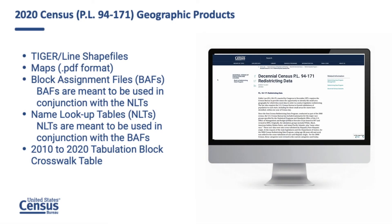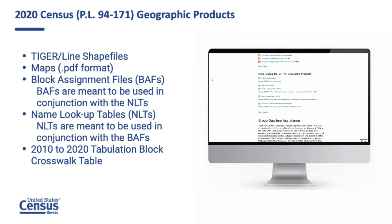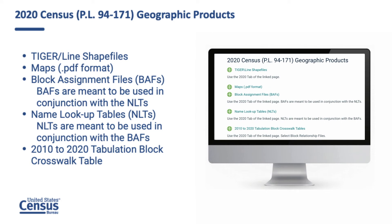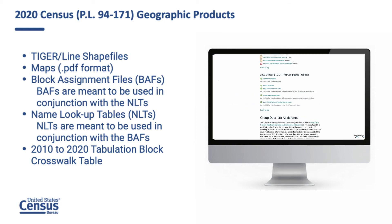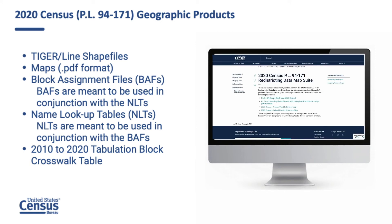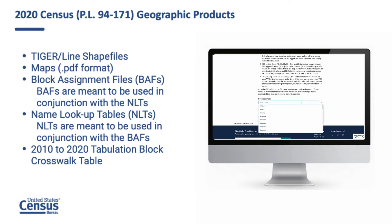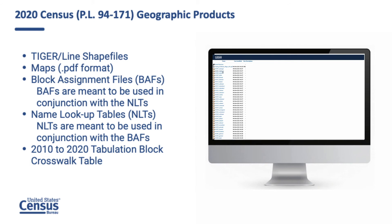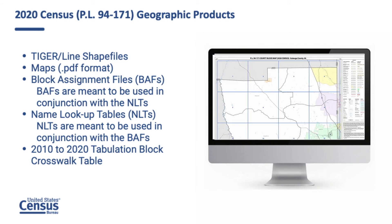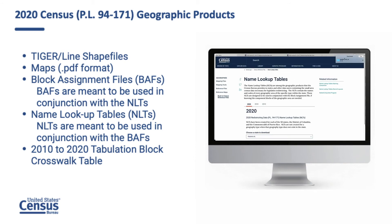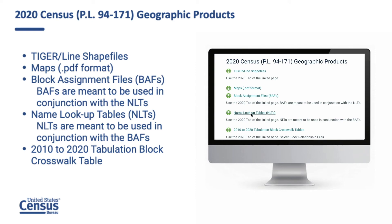Data users who need more in-depth analysis of geographic entities or relationships can find support through a suite of geographic support products. The 2020 Census PL 94-171 redistricting data are tabulated based on the geographic areas provided in these products. The suite includes TIGER/Line shapefiles, reference maps, block assignment files, name lookup tables, and 2010 to 2020 tabulation block crosswalk tables. Some data users will prefer to look at maps; others will prefer to work with text files to understand which blocks nest within other geographies.